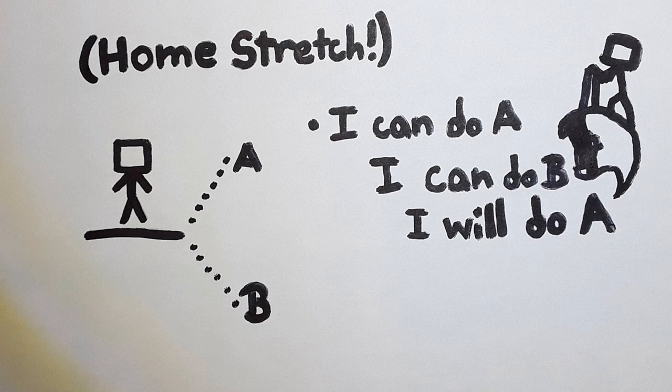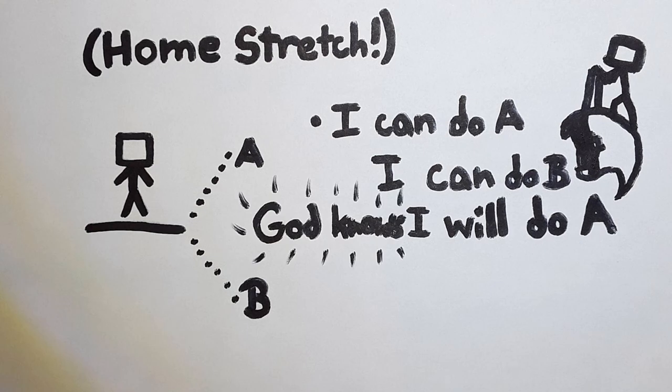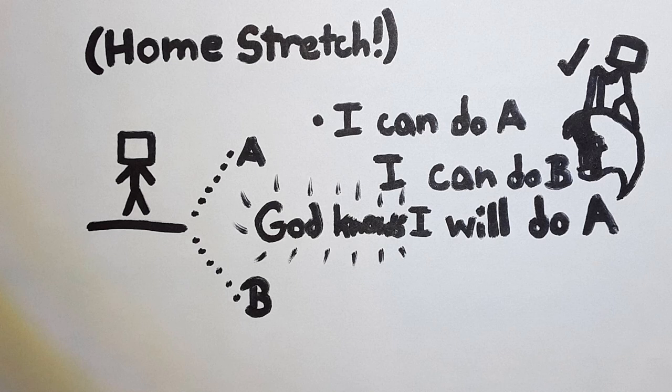Now, you'll notice we haven't even mentioned God yet. This is because God's knowledge of a fact has no more power over reality than the fact itself. Remember, knowledge doesn't do anything. So, we can replace the statement that I will do A with the statement that God knows that I will do A without changing the scenario one bit. I still have the free will to choose between A or B, even though I will eventually choose to do A.